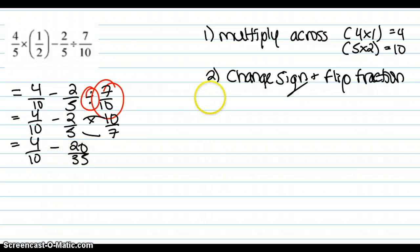So our third step would be to find a common denominator. So something that both 10 and 35 go into is 35.